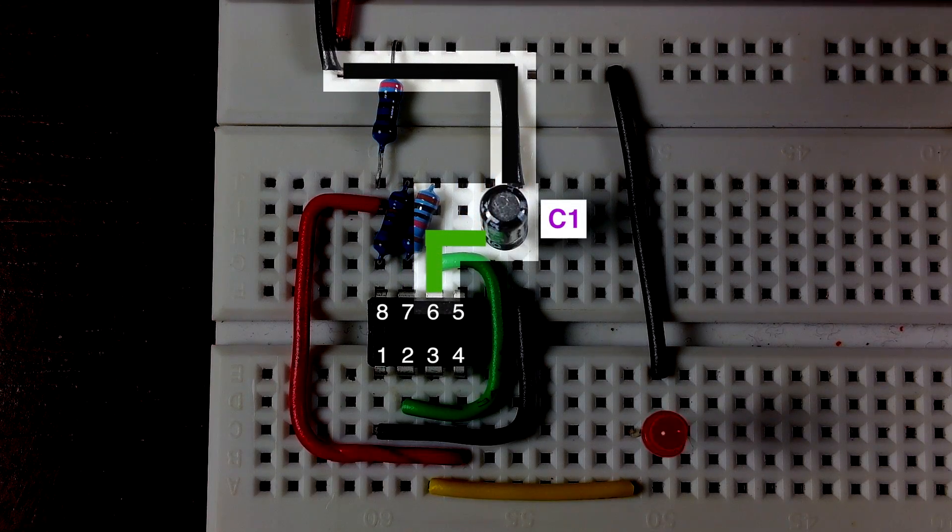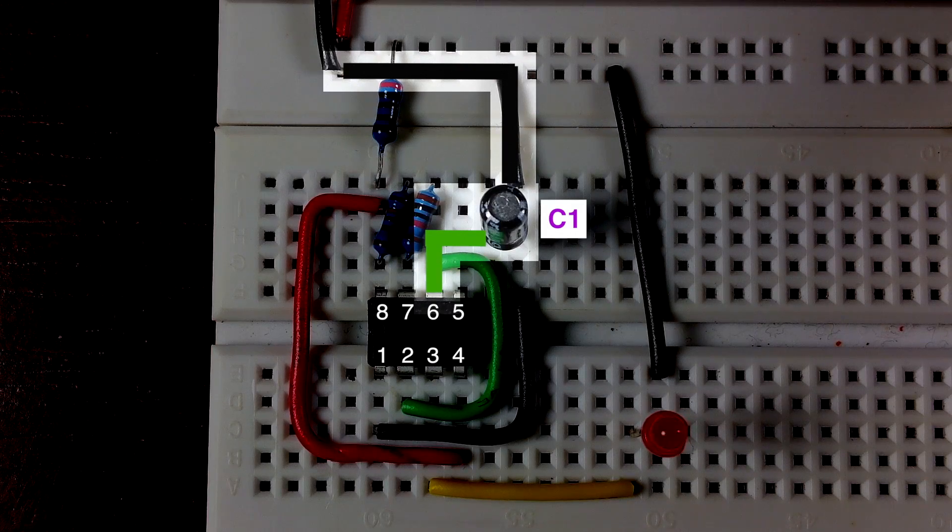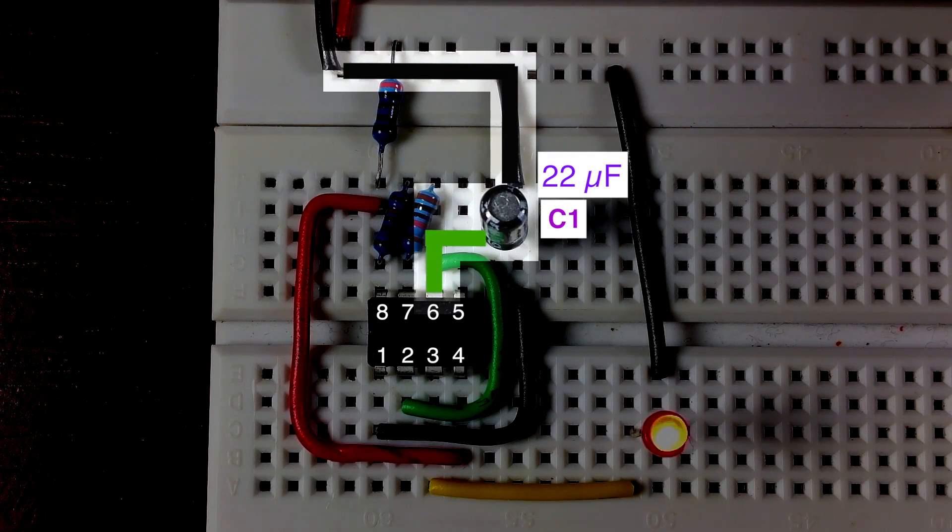Along with the two resistors, we need to add a capacitor between pin 6 and the ground. Be sure to connect the capacitor with the negative side going to ground. Here I'm using a 22 microfarad capacitor.